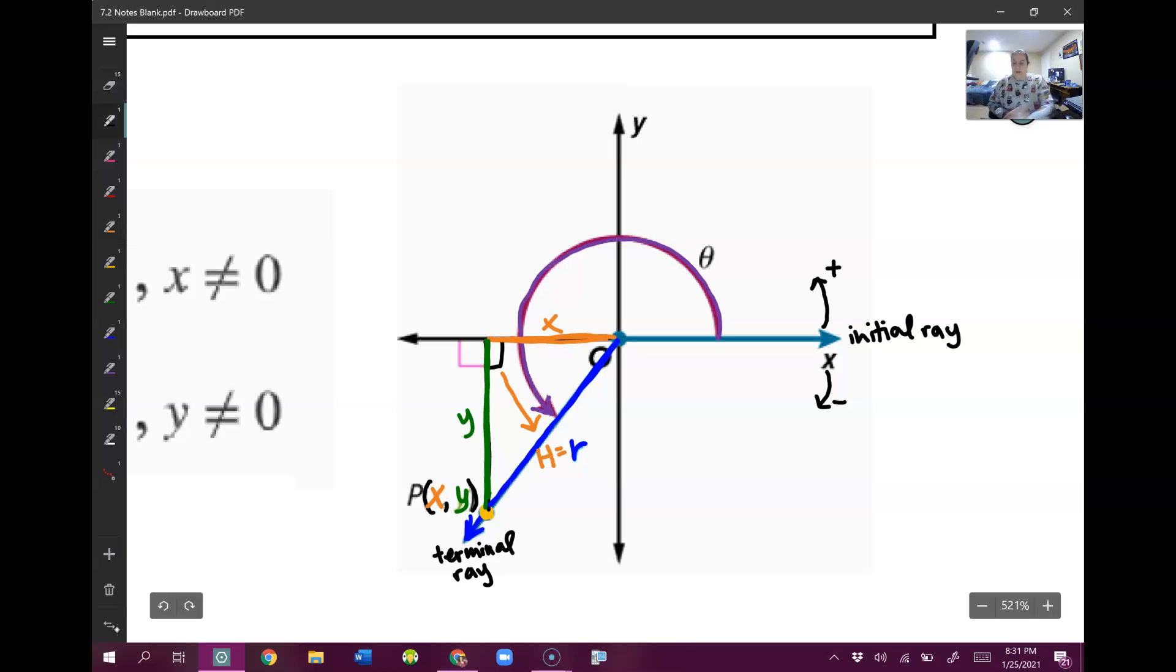Now we need to figure out the angle we're focusing on. Whenever you draw your angle using these initial rays and terminal rays, like we did in 7.1, your angle should always be close to the center or the origin. That's the angle we're focusing on. Always. It's never this angle out here. That doesn't work. It's always the one in the middle.